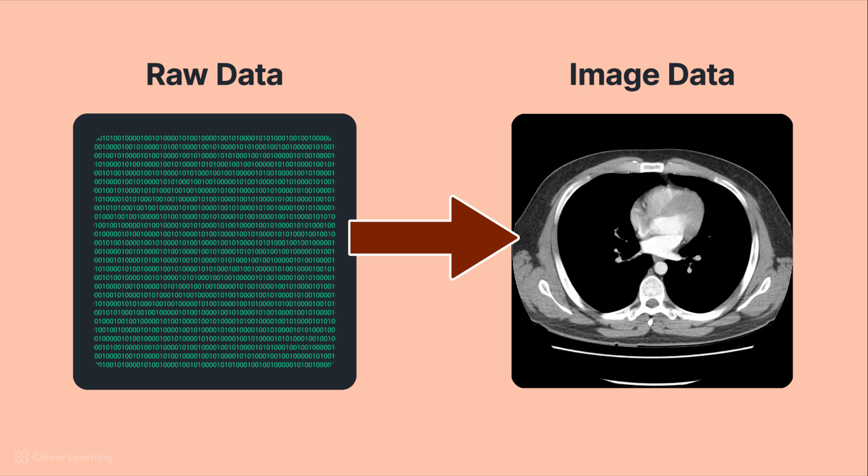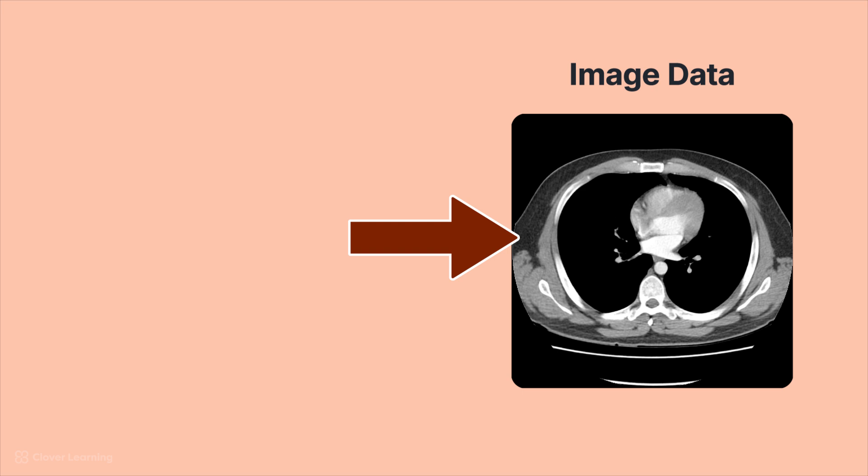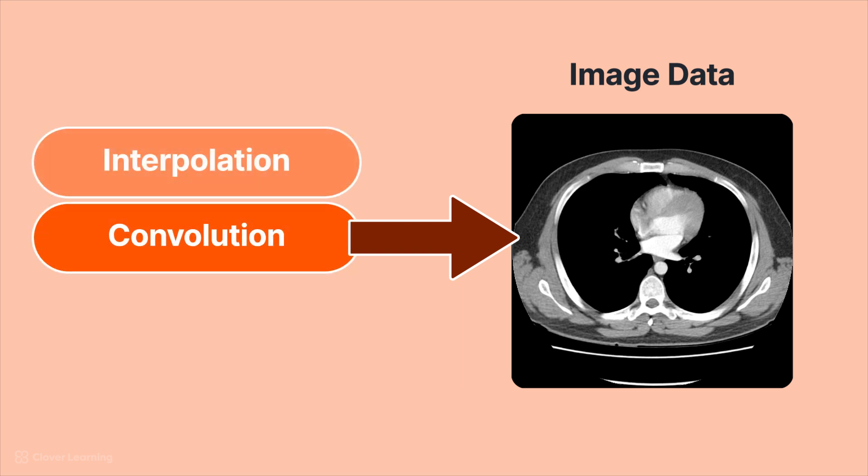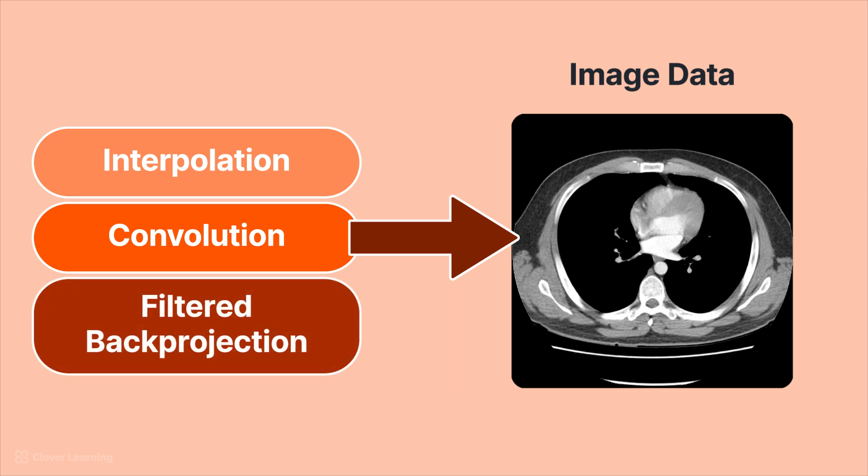So how does the reconstruction process actually work? There's actually three separate steps, all which contribute to reconstruction. The first step is interpolation, after that is convolution, and then finally, filtered back projection. Each of these processes are mathematical manipulations of the data acquired by the detectors. And without these manipulations, the CT image would just be a blurry mess of meaningless pixels.